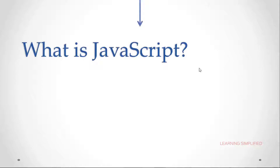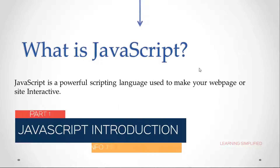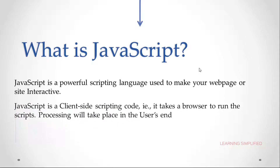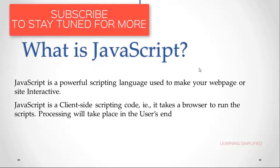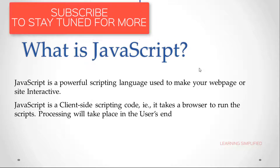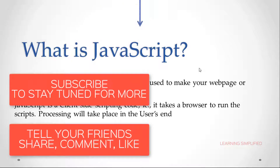Now the question is, what is JavaScript? JavaScript is a powerful scripting language used to make your web page or site interactive. JavaScript is a client-side scripting code, which means it requires a browser to run the scripts. Processing will take place on the user's side.